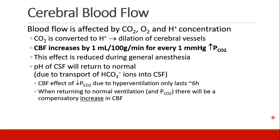Flow to the brain is affected by carbon dioxide, oxygen, and hydrogen ion concentration. Carbon dioxide is converted to hydrogen ion, and this leads to dilation of cerebral blood vessels. In fact, cerebral blood flow increases by about 1 milliliter per 100 grams of brain tissue per minute for every 1 millimeter of mercury increase in pCO2. This effect is reduced during general anesthesia, but when we are doing neurosurgery, we try to avoid increases in pCO2 in order to avoid increases in cerebral blood flow, which could lead to a swollen brain.